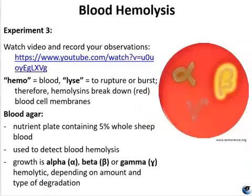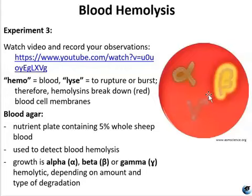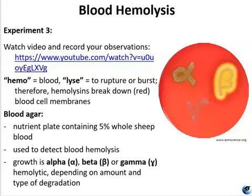Blood hemolysis tests detect the presence of exotoxins called hemolysins, which are able to destroy red blood cells and hemoglobin. Blood agar — sometimes called sheep blood agar — includes 5% sheep blood and tryptic soy agar base. It allows for differentiation of bacteria based on their ability to hemolyze red blood cells. The three major types of hemolysis are beta hemolysis, alpha hemolysis, and gamma hemolysis, depending on the amount and type of degradation. For experiment three, you're going to watch a video and be able to describe which species shows alpha or beta hemolysis.